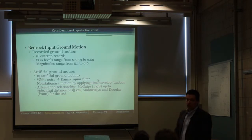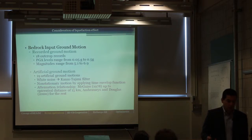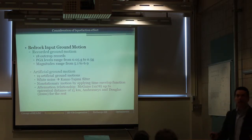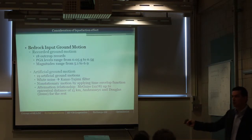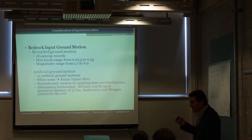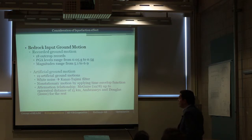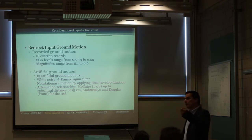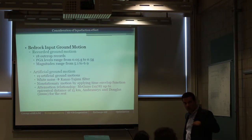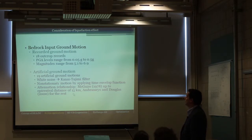The problem is that you need to find ground motions that can reasonably be applied at the bedrock, so you cannot pick records on Soil C or Soil D according to US or European codes. You need either records on bedrock or artificially generated motions corresponding to bedrock conditions, because you want to propagate them upward. You always have the option to take a recorded signal, deconvolve it to bedrock level, and propagate it back up — but that requires knowing the exact soil profile at the recording site. We split the ground motions into recorded and artificial.